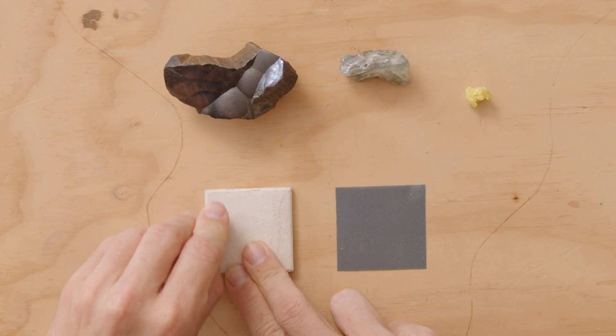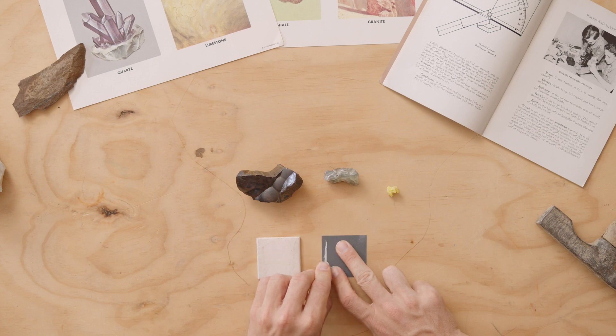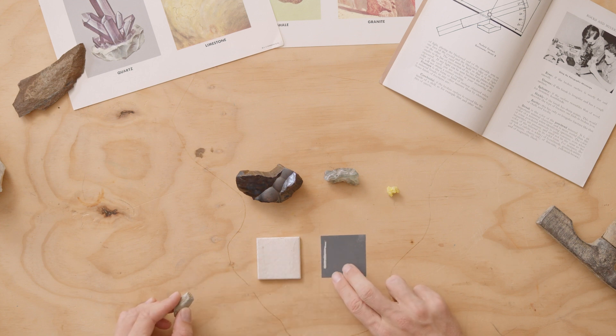This is talc, and it doesn't leave much of a mark on the white ceramic, but on the dark ceramic you can see it leaves a very chalk-like mark.